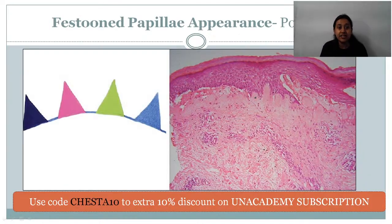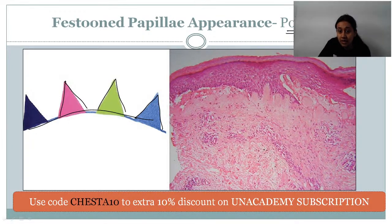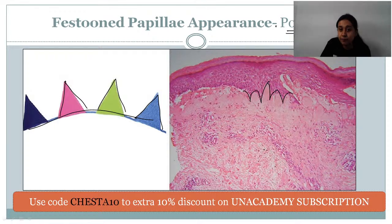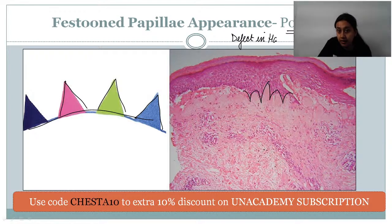Next is the festooned papilla appearance. Festooning is the type of decoration seen at parties. This appearance is seen in case of porphyrias. The pathology is present just below the dermis, at the level of the dermo-epidermal junction. Porphyrias are defects in heme synthesis leading to accumulation of porphyrins, which are phototoxic — at a particular wavelength of 608 nm they cause harmful effects to the skin.